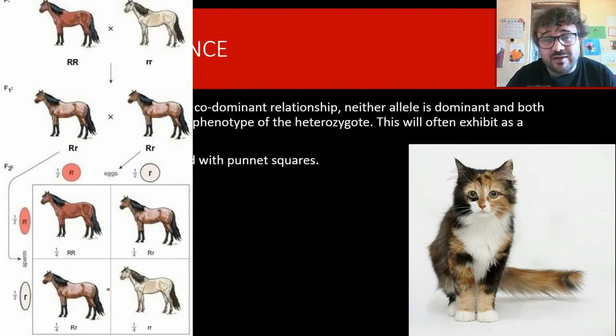We can predict it with Punnett squares. It's pretty simple. So, here's a horse. We've got a red horse, white horse. This is the way it's actually done, by the way, with the lower cases and uppercases. You can do it the same as the other one, though, if you want. And C, R, or C, W. If you want to do it with those, that's how you should do it, or you do it this way. They're your options.